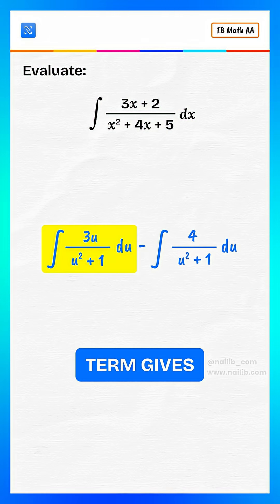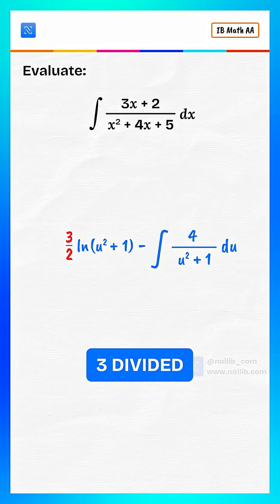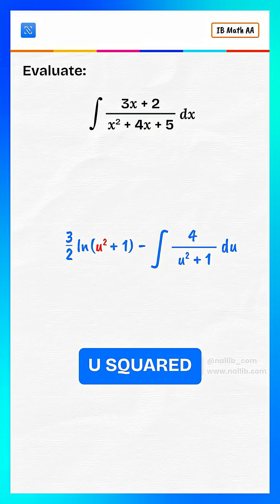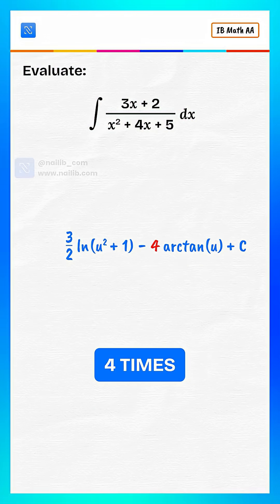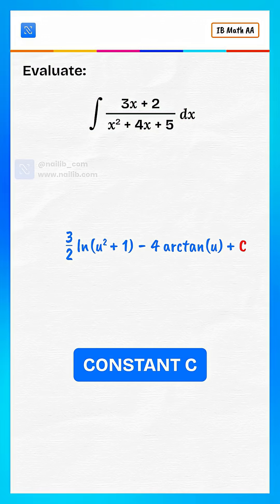First term gives 3 divided by 2 times log of u squared plus 1. And second term gives 4 times arctangent of u plus constant c.